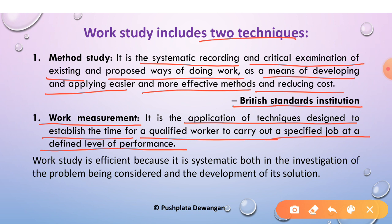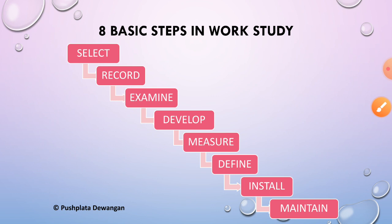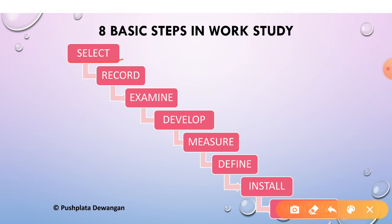Work study is efficient because it is systematic both in its investigation of the problem being considered and in the development of its solution. There are eight basic steps in work study. The first step is select — select the job or process which is to be studied.